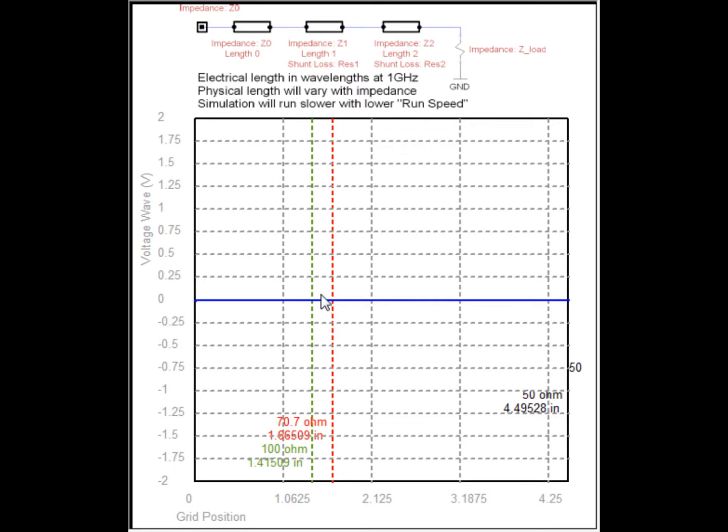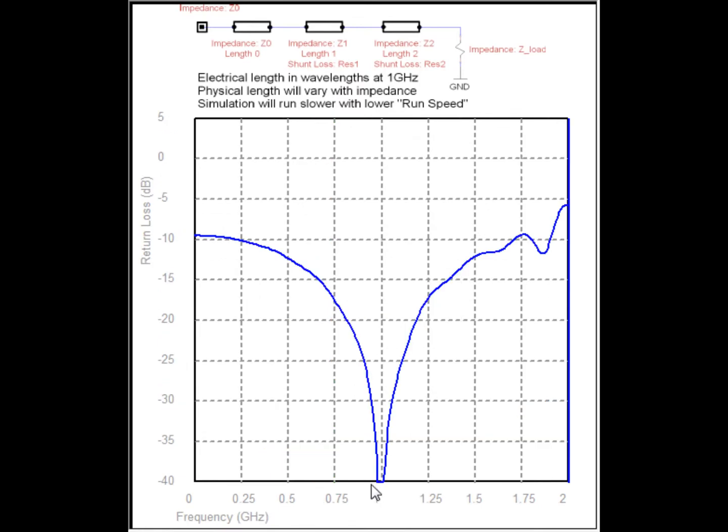The other thing that's sort of interesting, again, because it's a quarter wavelength. When we take a look at the return loss, we end up at one gigahertz, where it's a quarter wavelength, that's where our null is. So there's no return coming back to the source at the quarter wavelength.